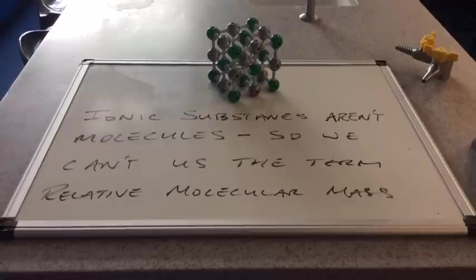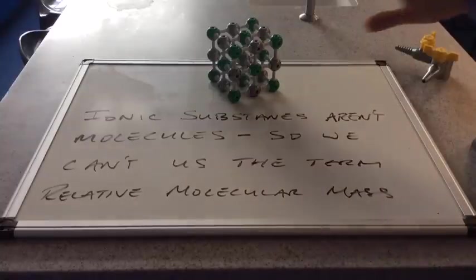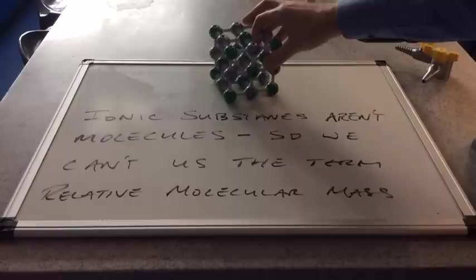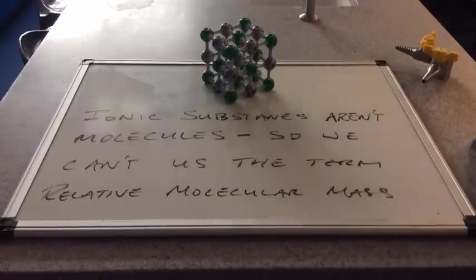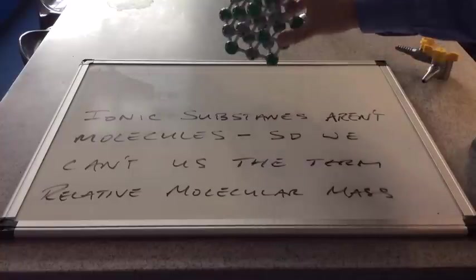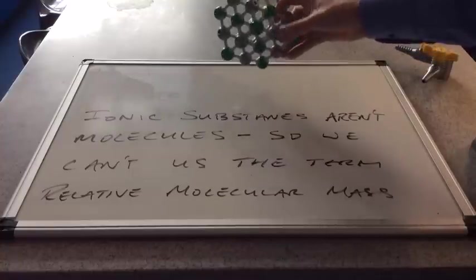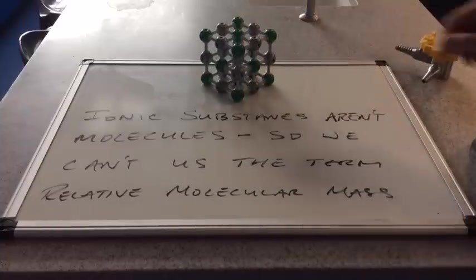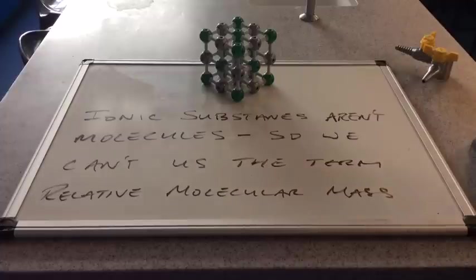So the next thing we need to talk about are ionic substances. I've got a model here of a sodium chloride ionic lattice. And what we need to appreciate is this is not a molecule. Yes, it's a group of more than two atoms. Yes, they're held together by bonds. But these aren't covalent bonds anymore, these are ionic bonds.